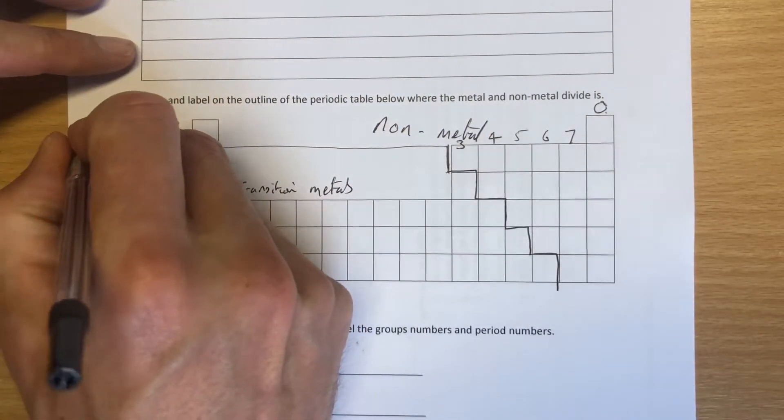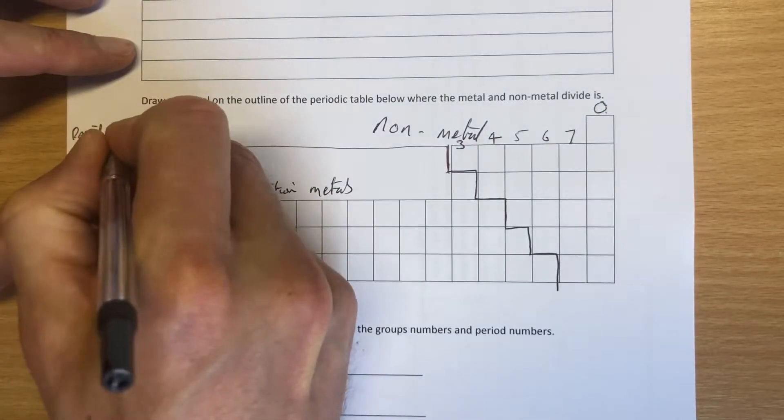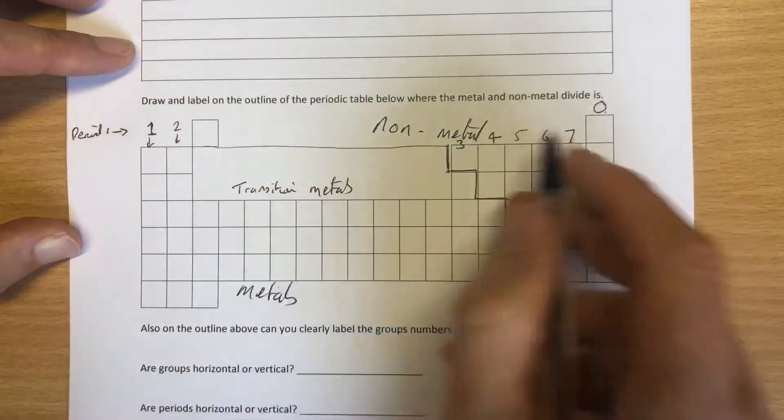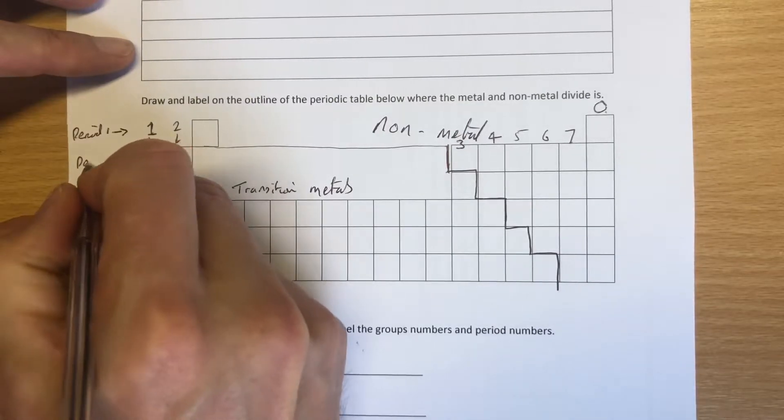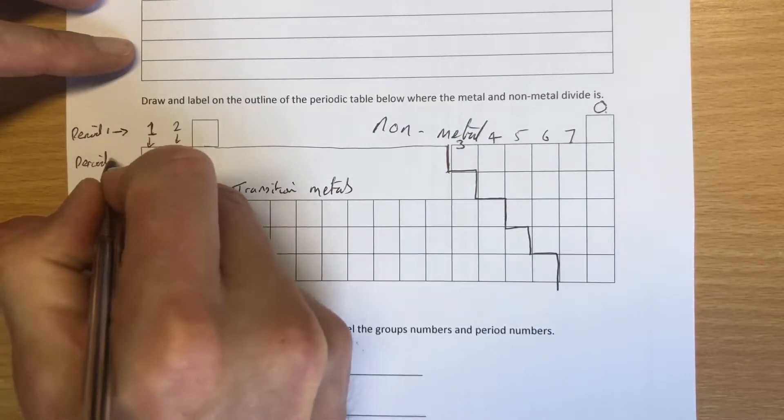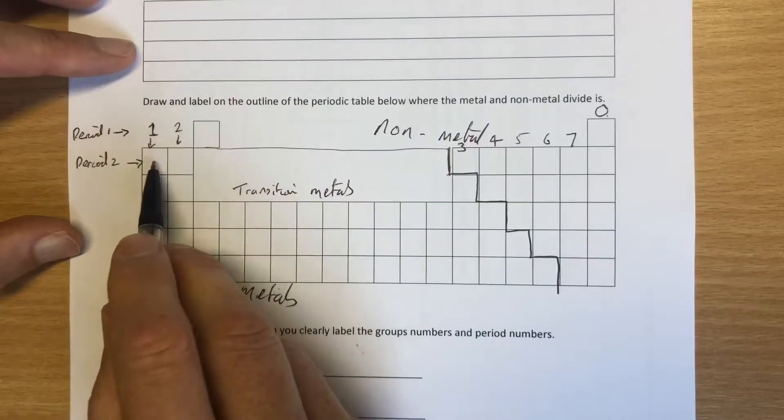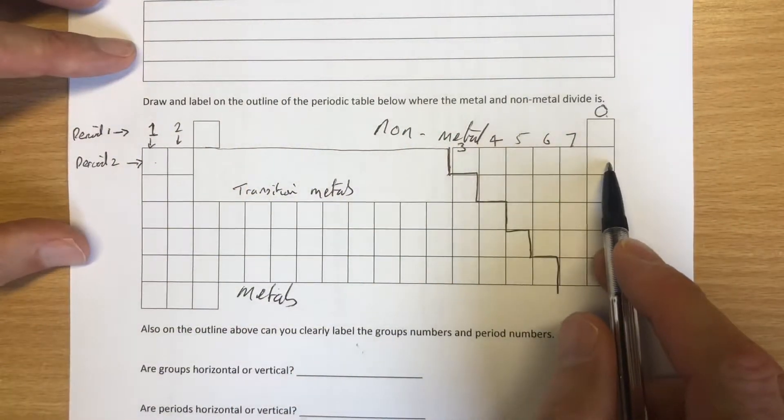So period one is this one here. Period one goes that way: hydrogen, helium. Period two, row two down here, starts there, lithium, and goes through to neon.